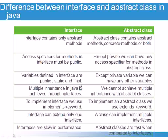Fifth difference: To implement an interface we use the implements keyword. To implement an abstract class we use the extends keyword.